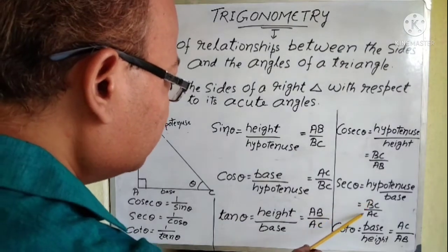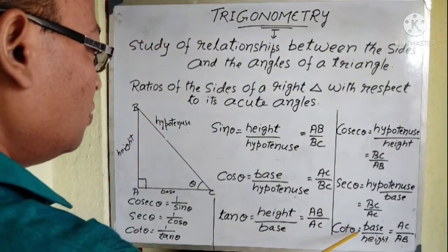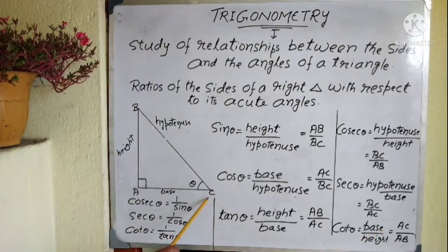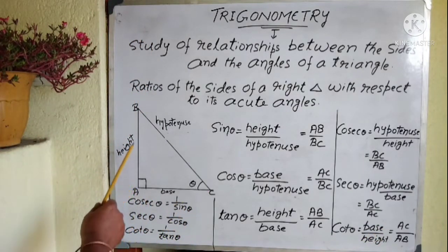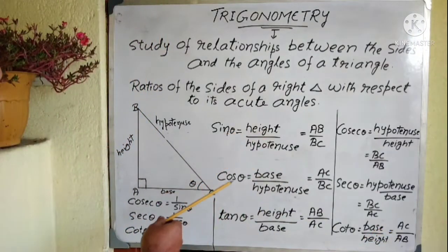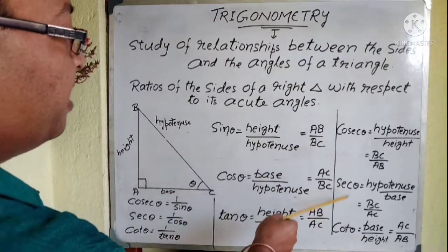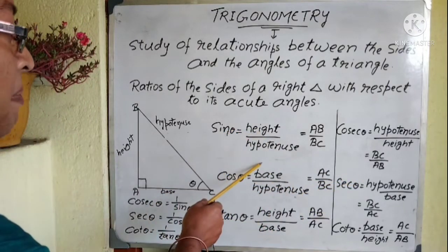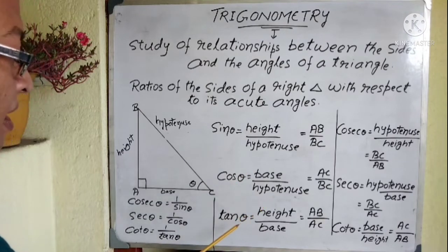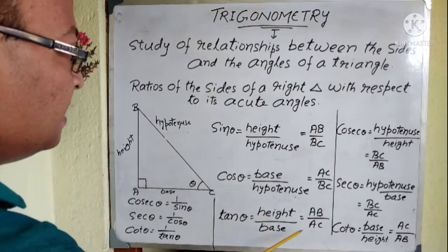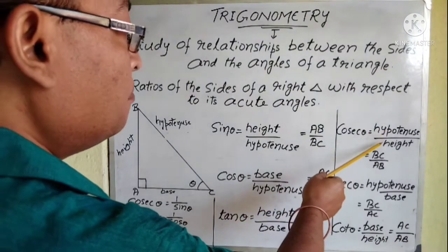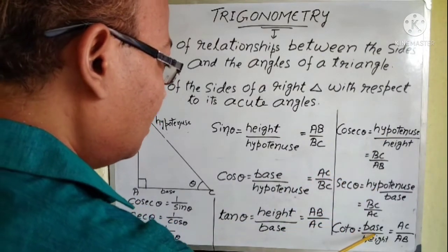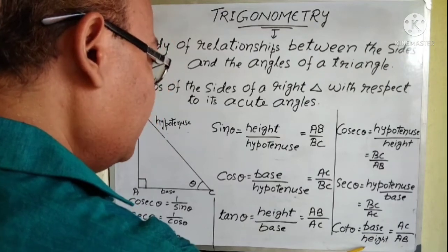Sec theta is equal to BC by AC, and cot theta is equal to base by height, so AC by AB. These are the six trigonometrical ratios: sin theta is height by hypotenuse, cos theta is base by hypotenuse, tan theta is height by base, cosec theta is hypotenuse by height, sec theta is hypotenuse by base, and cot theta is base by height.